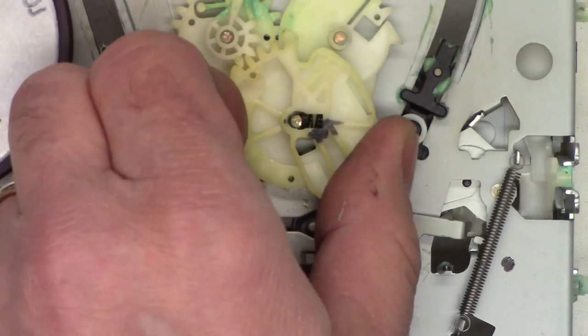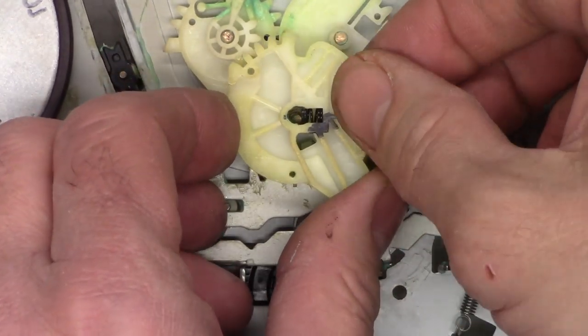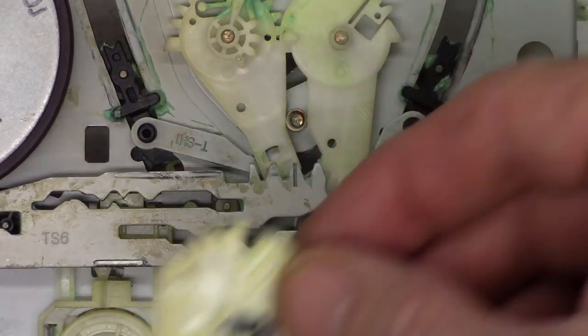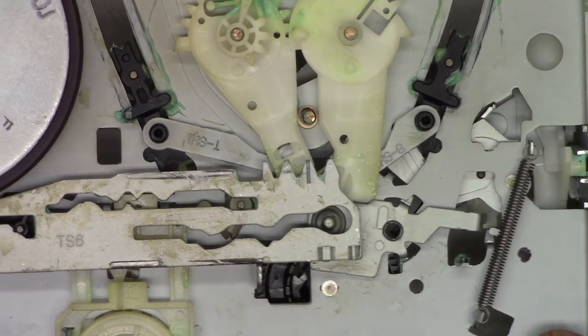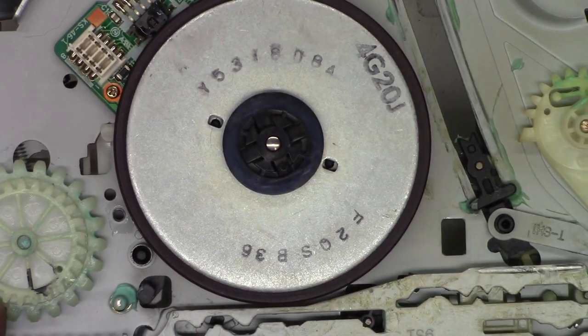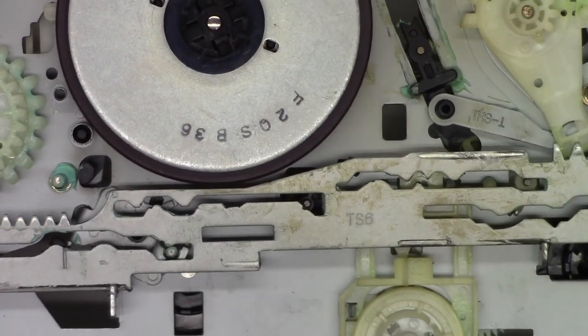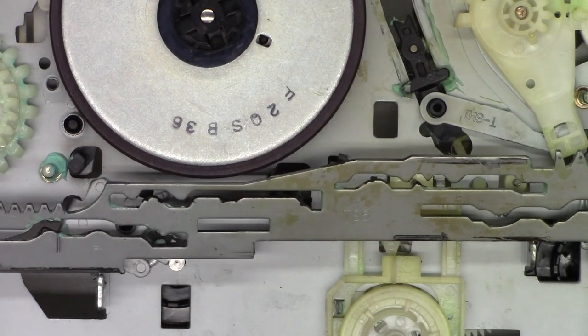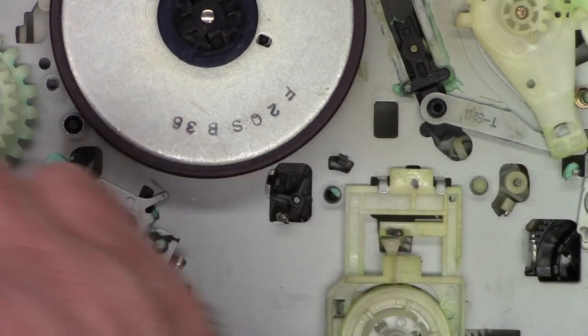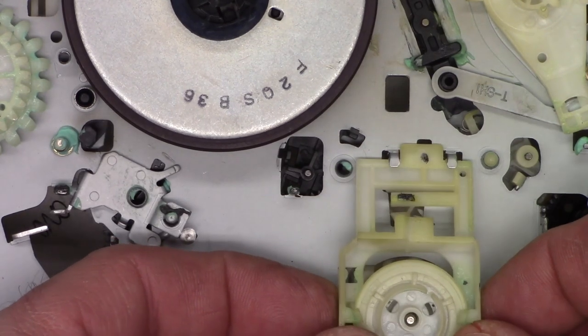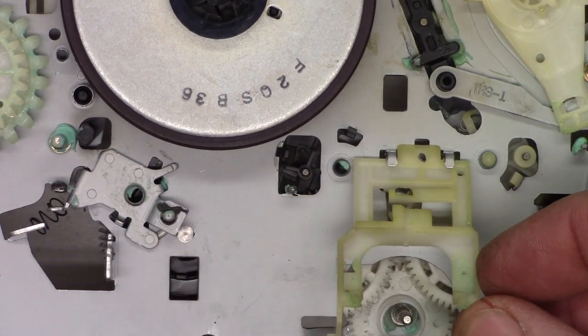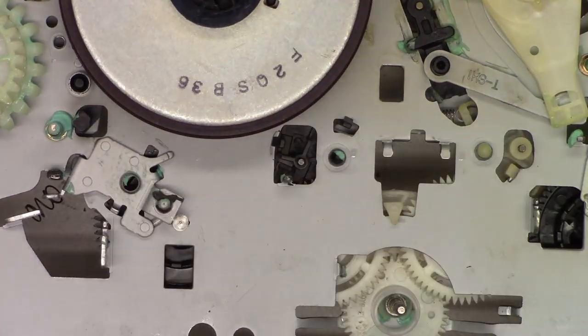Kind of hard to see, but I'm moving this tab back right here to release this gear. There it is. Now this loading gear lifts out of the way. Now this complete sliding mechanism should be able to tip up and lift completely out.